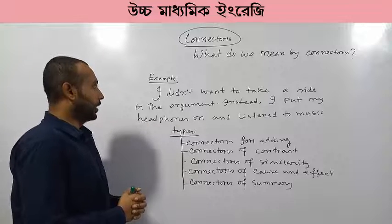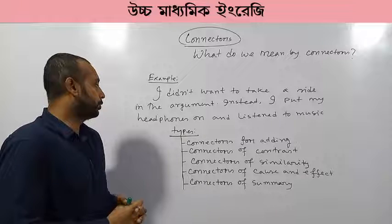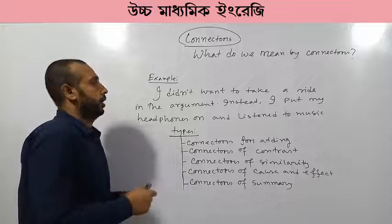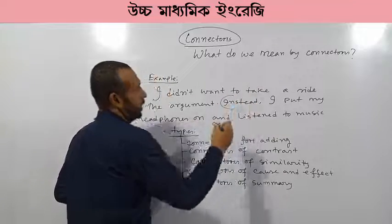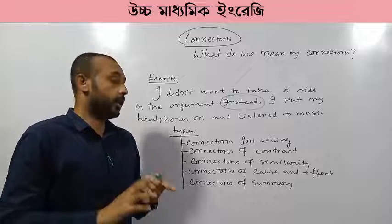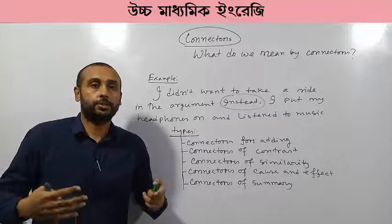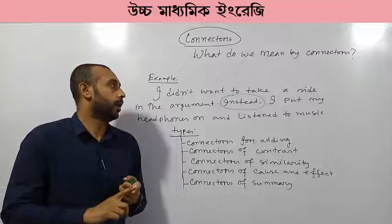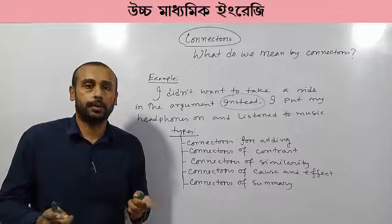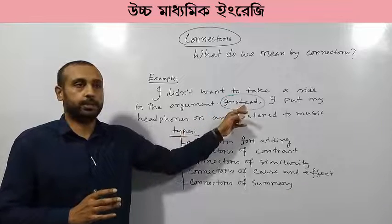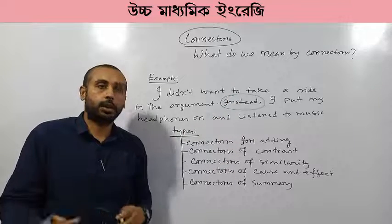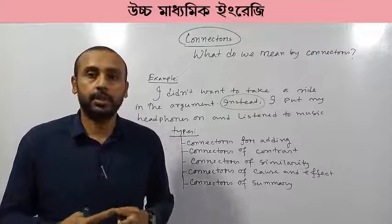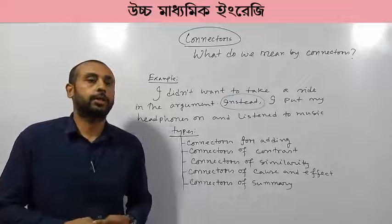Look at this example: 'I didn't want to take a side in the argument. Instead, I put my headphones on and listened to music.' Here the connector is 'instead.' I didn't want to take a side — I wanted to be neutral. Instead, I put my headphones on. The use of connectors depends on context, not just grammatical rules. You have to understand the passage very well, then use the connector.